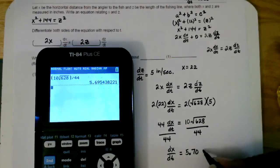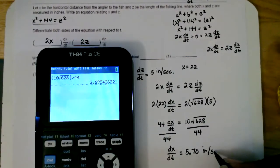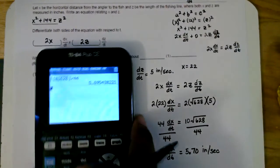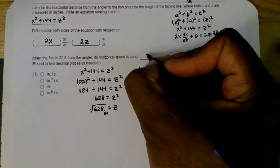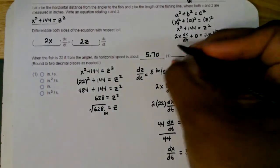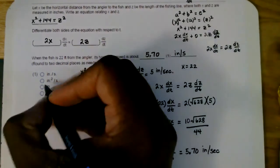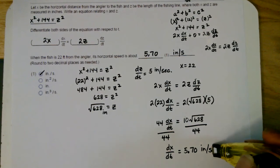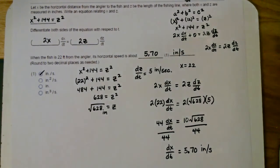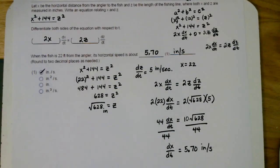And of course, this is going to be in inches per second, by the way. Because our x value is in inches, or the distance is in inches, and then our time is in seconds. So to answer the question, when the fish is 22 feet from the angle, the horizontal speed is about 5.70, rounded to two decimal places, and it's going to be in inches per second. So if a homework problem similar to this shows up, this should be able to assist you with that problem as well. Reach out to me if you have any questions, or if you need additional help.